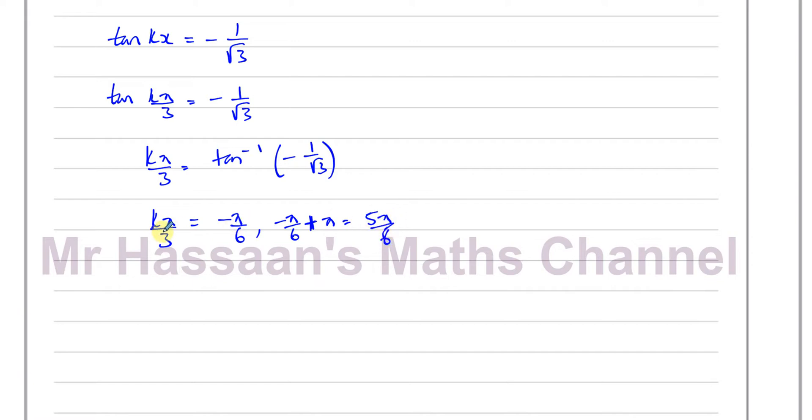That should give us an answer where k will be positive. If I take k π/3 as minus π over 6 and solve for k, I multiply both sides by 3 over π. The π's cancel out, that gives you minus 1 over 2, 3 over 6. So that's not an answer because we know that k must be greater than 0.